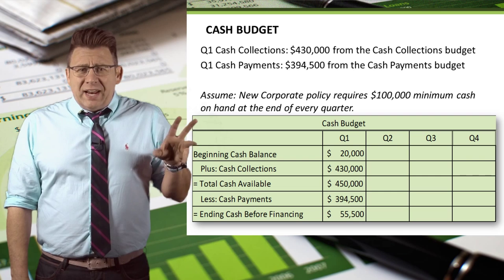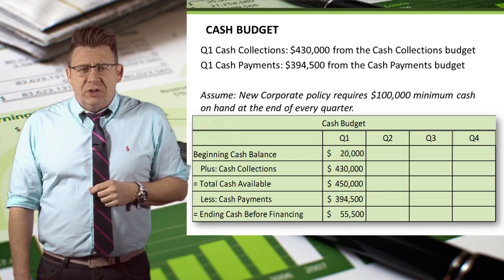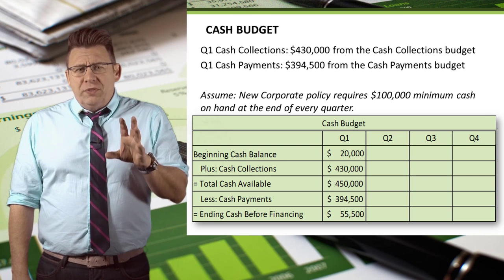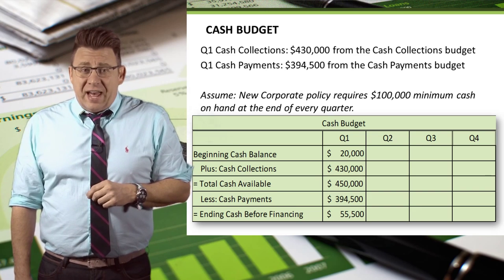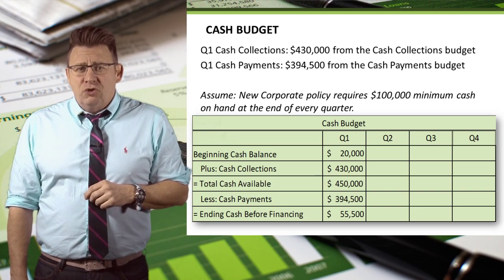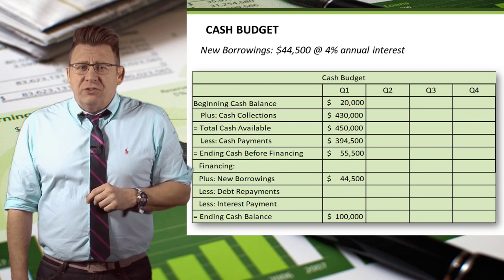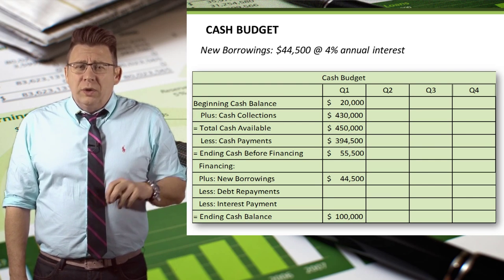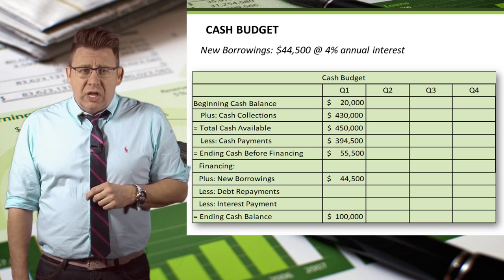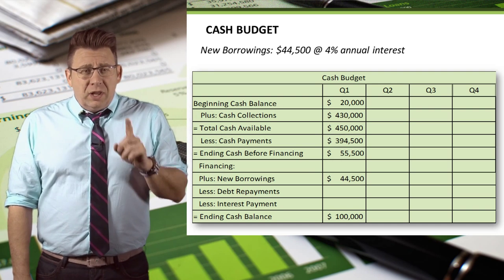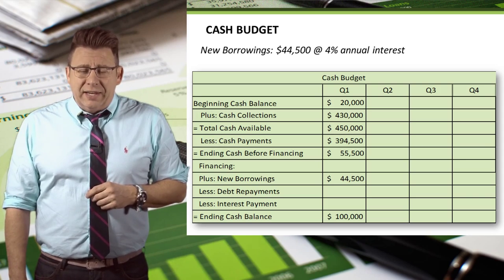This shows how businesses budget short-term financial needs. Let's assume a new corporate policy requires $100,000 of cash on hand at the end of each quarter. Since we only have budgeted $55,500, we will need to borrow an additional $44,500. So our ending cash before financing plus our new borrowings gives us a $100,000 ending cash balance.